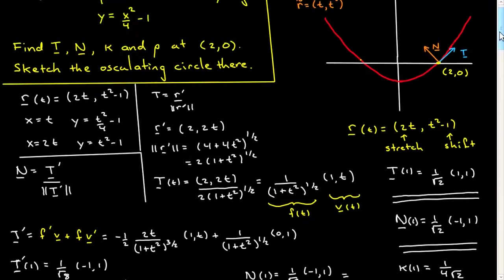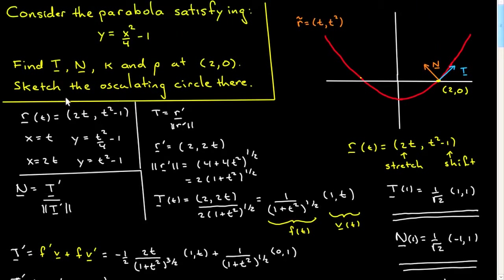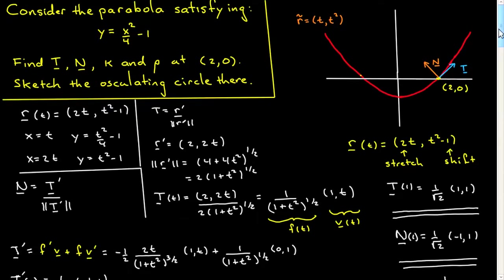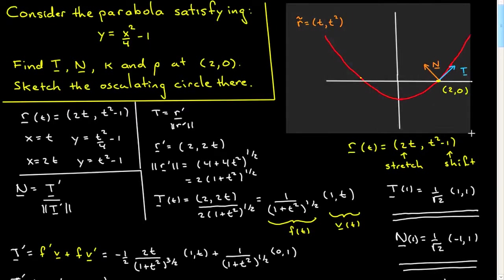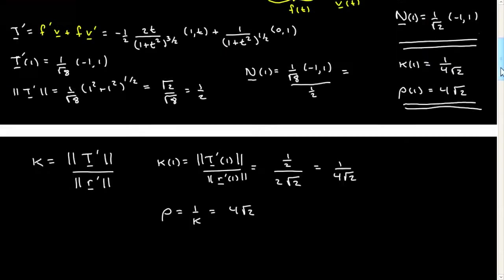The final thing we're asked to do now is to plot or to sketch the oscillating circle corresponding to that point. And for that, what I'll do is, let me grab this. For one thing, there's not enough room on here to plot it. And second of all, I will likely make a mistake and not get it right the first time.